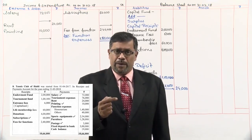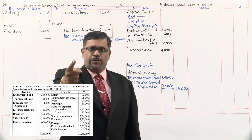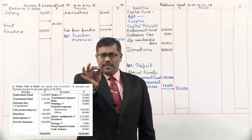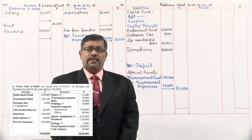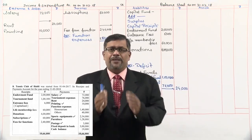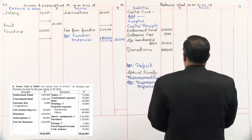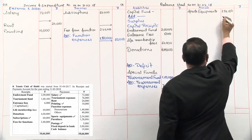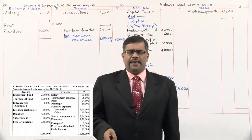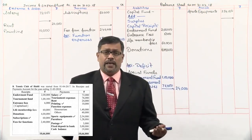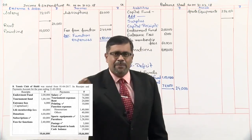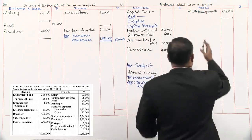Next, sports equipment. It appears on the payment side of the receipts and payments account — meaning cash has gone out, sports equipment has been purchased. A new asset comes into existence — that is capital expenditure. Capital expenditure goes in the balance sheet. It has a tick mark, so there is an adjustment. We record sports equipment — 2 lakh 54,000 — and leave space for the adjustment. Next, furniture — also on the payment side, meaning furniture is purchased. A new asset comes into existence — capital expenditure in the balance sheet. No tick mark, so directly in the outer column — 1 lakh 28,000.